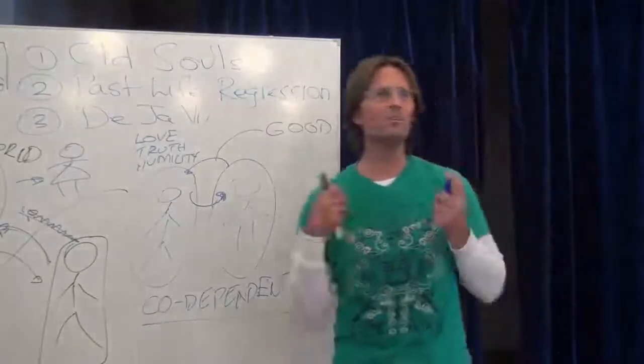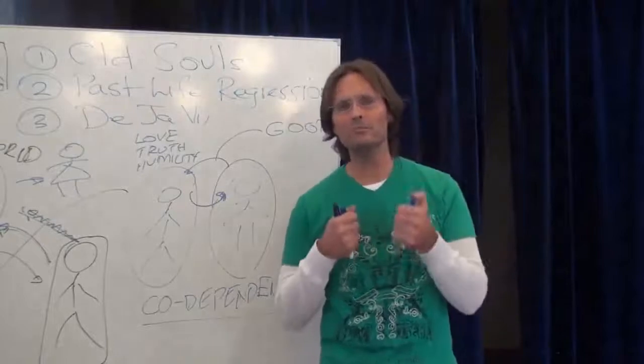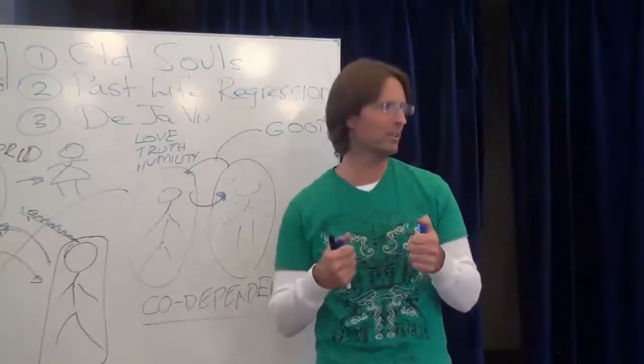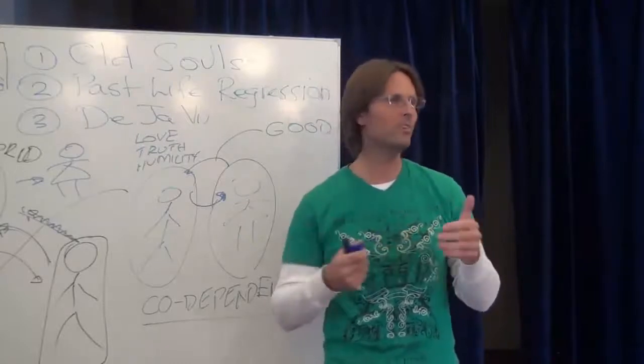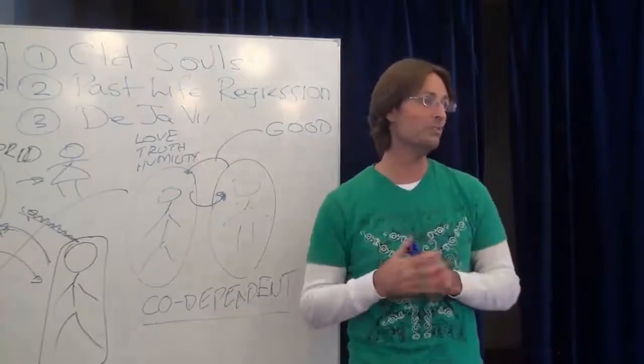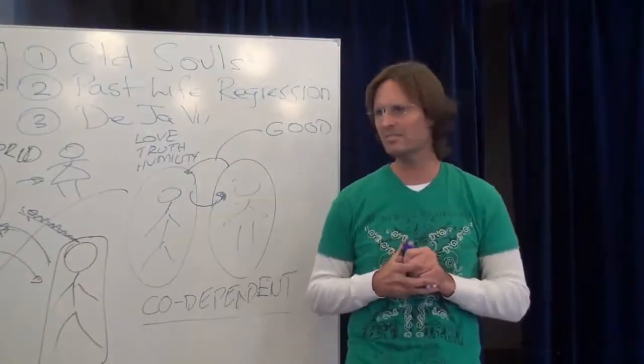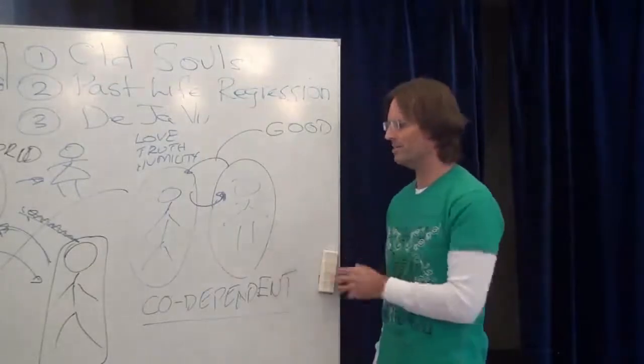And the problem with all co-dependent relationships is that they do at some point stagnate our progression. They at some point cause us problems in terms of our progression in love, truth, and humility, and also in terms of our happiness. Does that make sense to remember? So be very careful about co-dependent relationships.